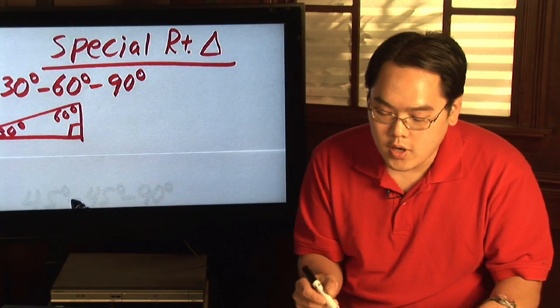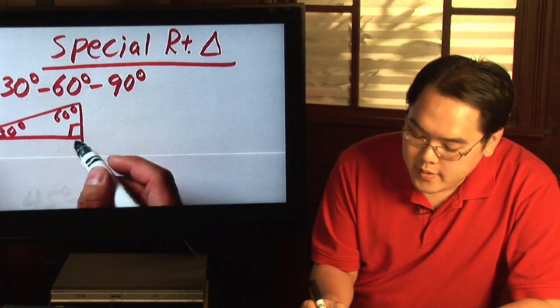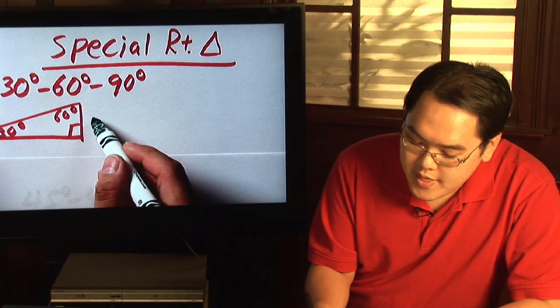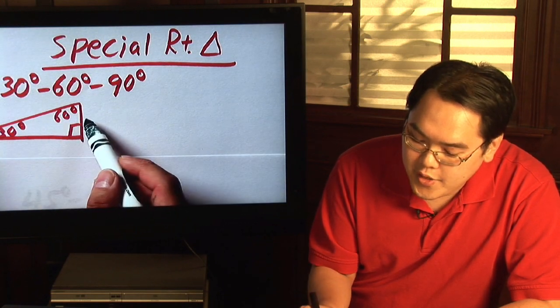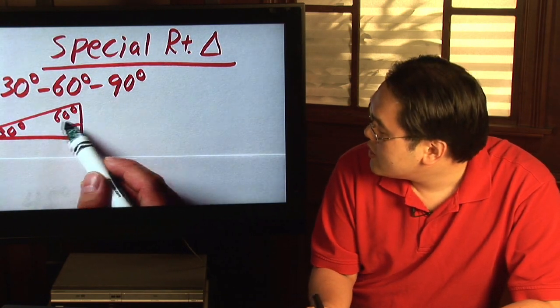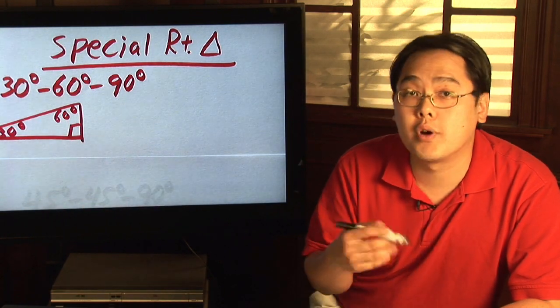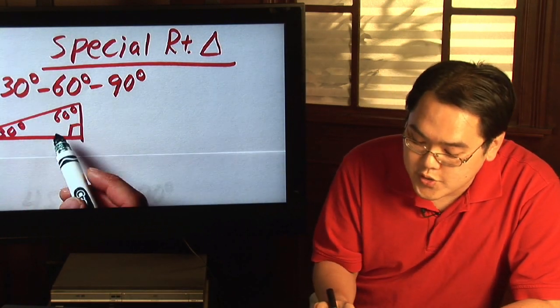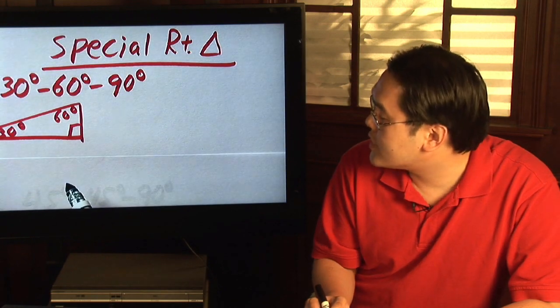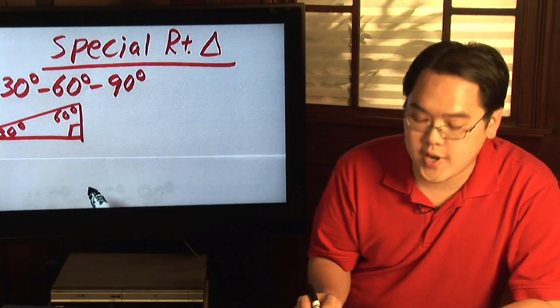According to a 30-60-90 triangle, the side that's facing the 30 degree angle is going to be half as much as the hypotenuse. Or put it another way, the hypotenuse is going to be twice as long as the side facing the 30 degree angle.